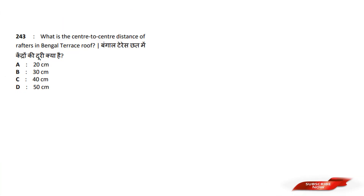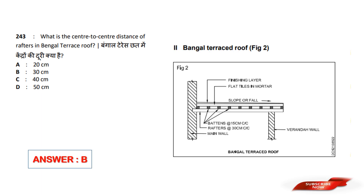What is the center-to-center distance of Rafters in Bengal Terrace? Options are: 20 cm, 30 cm, 40 cm, 50 cm. Answer option B — 30 cm. Battens are 50 cm and Rafters are 30 cm center-to-center. Answer is 30 cm.